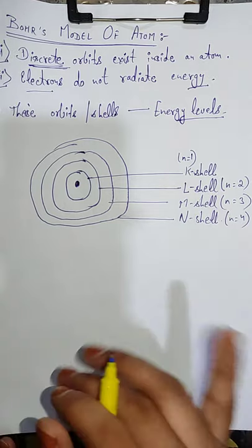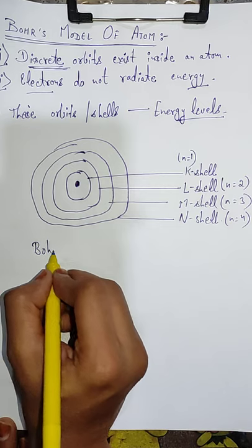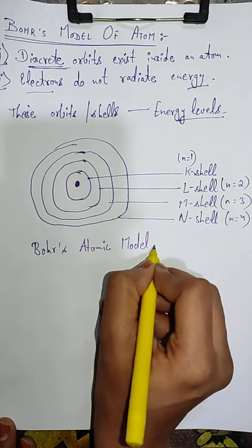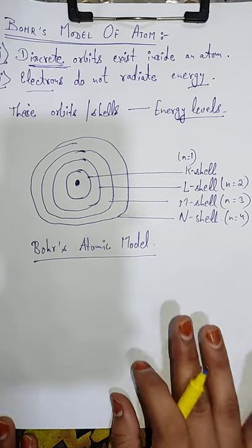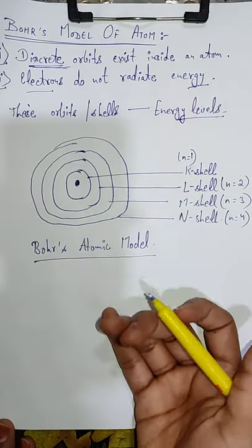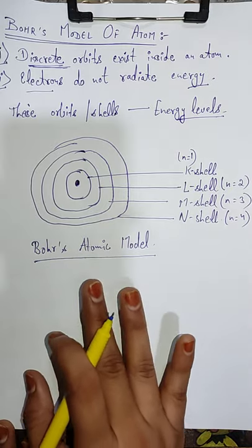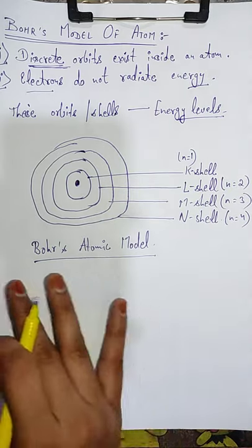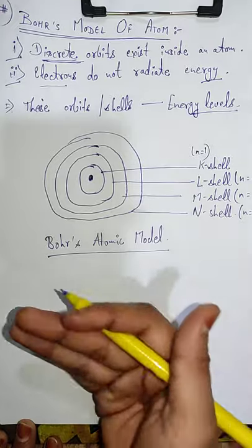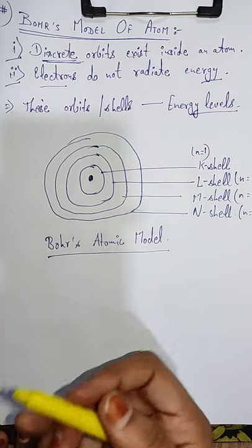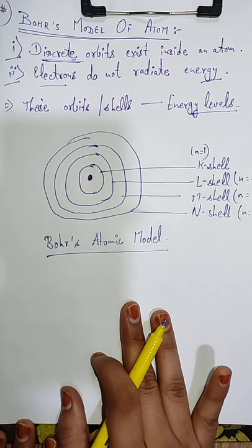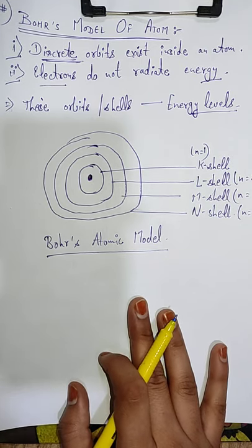So this was all about Bohr's model of atom — Bohr's atomic model. Present day hum jo model successful maante hain, ya jisko aadhar banakar hum electrons ka distribution padhenge aage, woh Bohr's atomic model hoga. Students, I hope aapko yeh 3 theories — jo samay samay ke saath hamare paas atoms ke models aaye — clear ho gaye honge. Agar aapko phir bhi koi doubt rahe, toh aap ek baar video ko pause karke rewind karke dekhiye. You may ask me in the comment section. Students, till then keep studying, keep growing, and most importantly, stay healthy. Take care of your health, thank you.